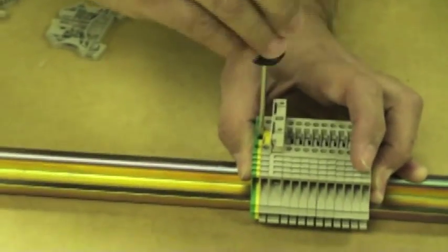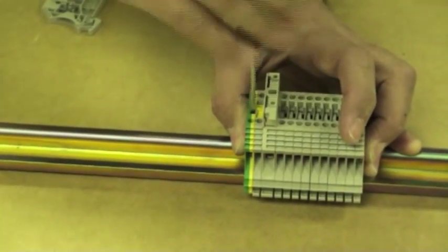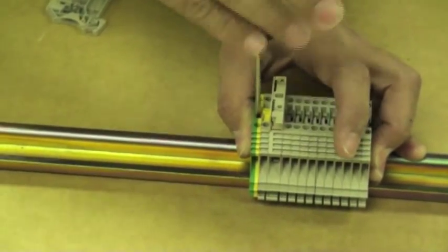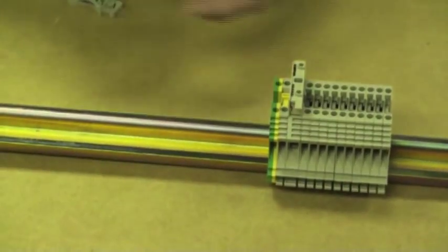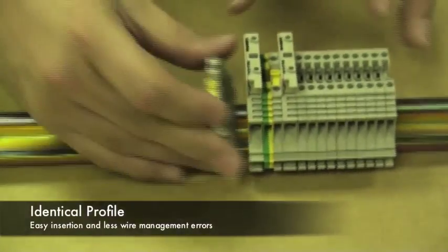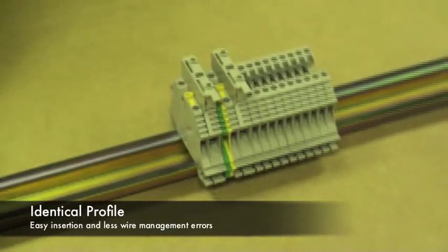An outstanding feature of the Weidmuller W-series terminal block product line is that all of the single-level feed-through, disconnect, ground blocks, and fuse blocks, from 2.5mm to 10mm square sizes, have an identical profile when installed on the mounting rail.